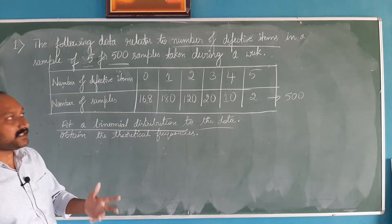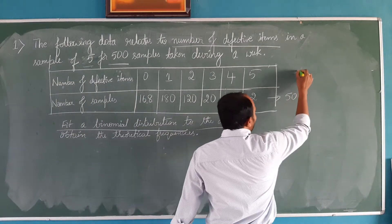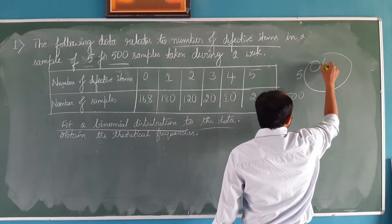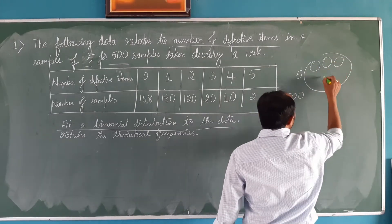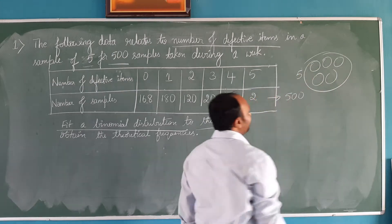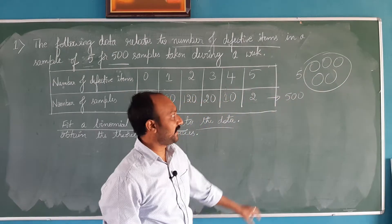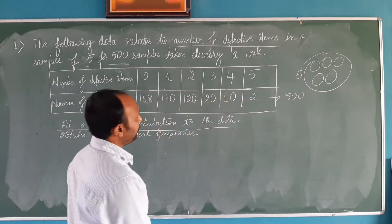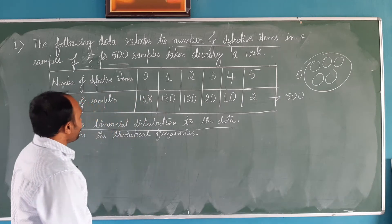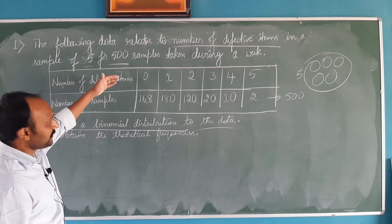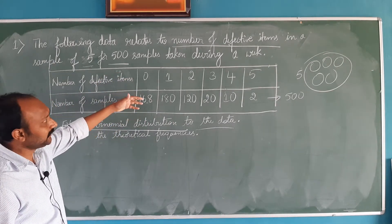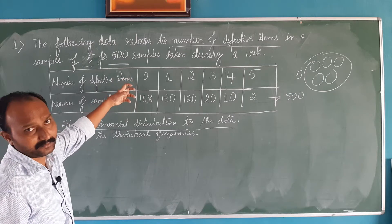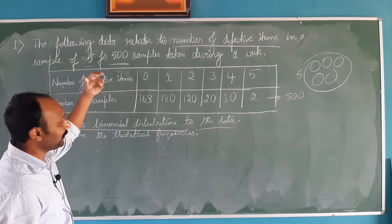What is the size of each sample? Sample size is 5. So we have taken 500 samples, each sample is of size 5. In a sample there are 5 items. Here is a table telling us how many defective items are there in a sample.